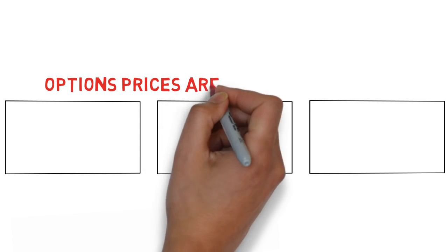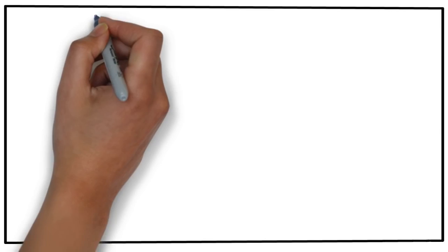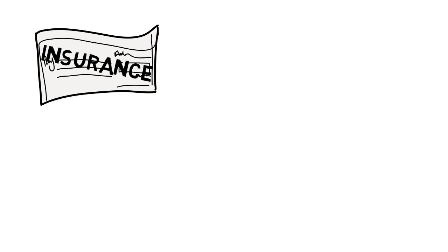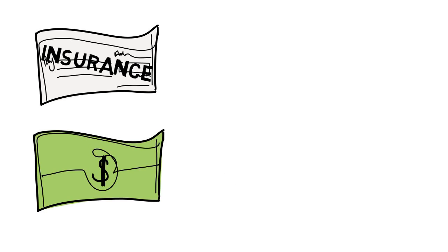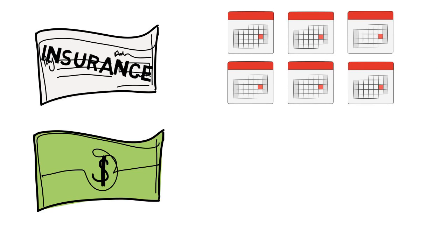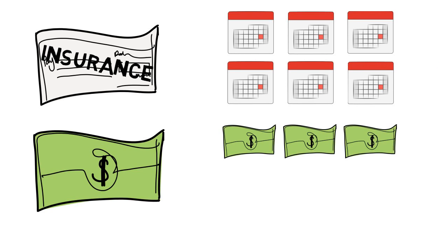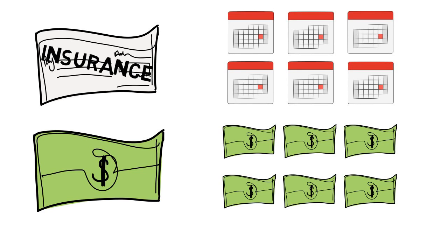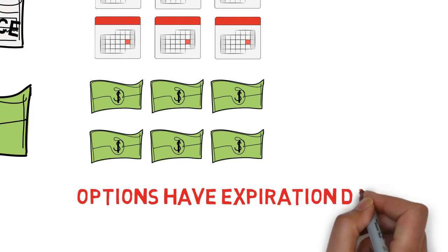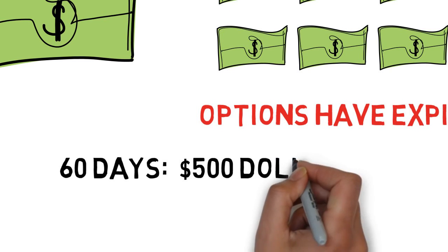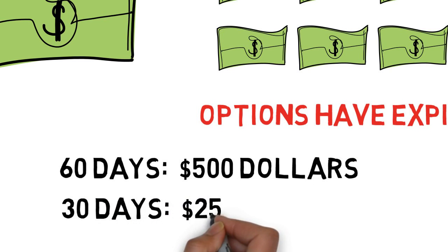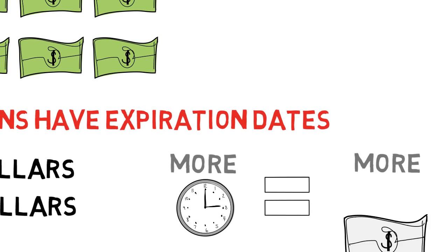Option prices are based on three elements of its underlying stock. The first one is time to expiration. Options are basically insurance, and of course you pay money for this insurance. You don't just get to pay a one-time payment and have insurance forever — you have to pay month after month to keep your insurance. Options work the same way. They have expiration dates. An option with 60 days until expiration might cost $500, when the option with only 30 days to expiration only costs $250. So more time equals more money.